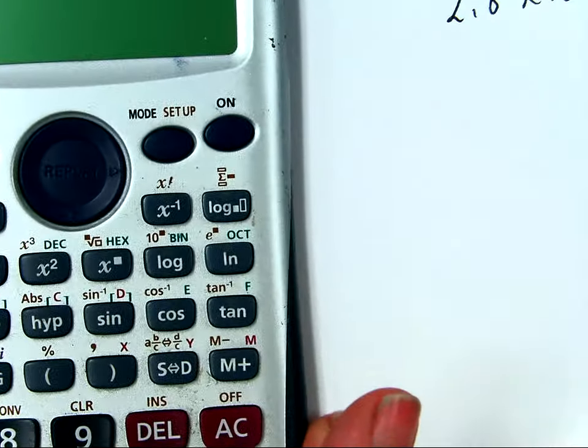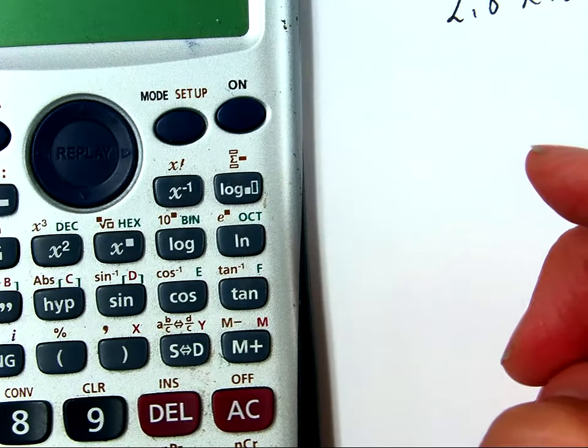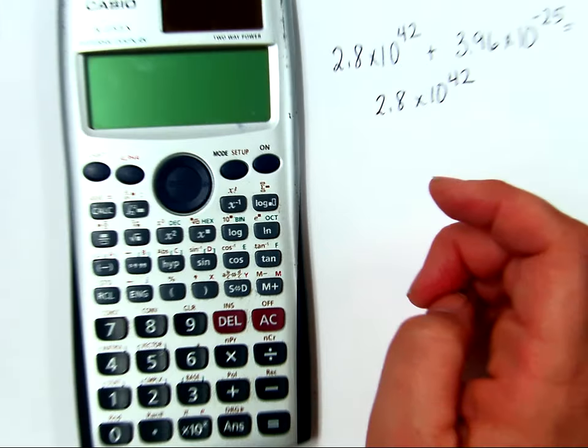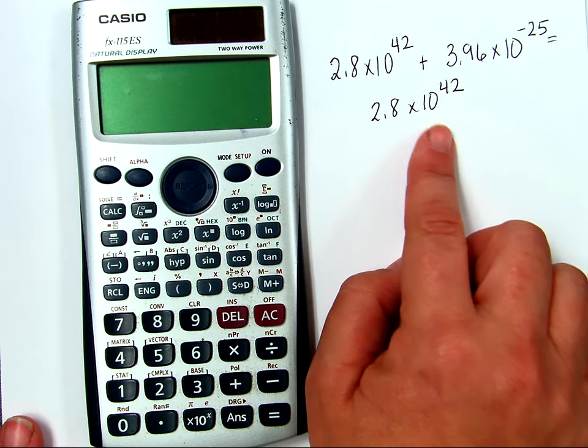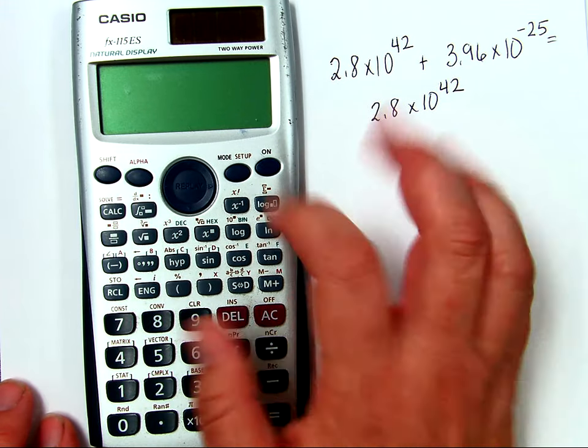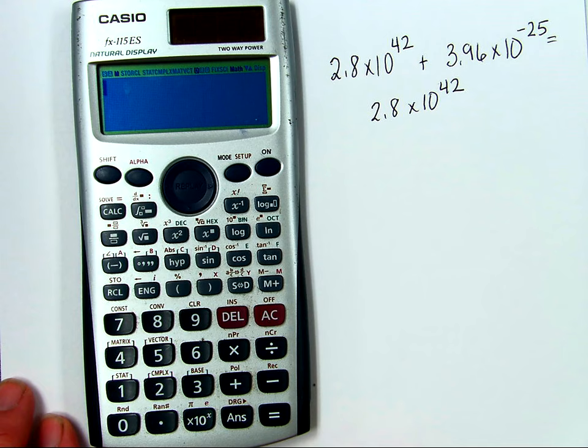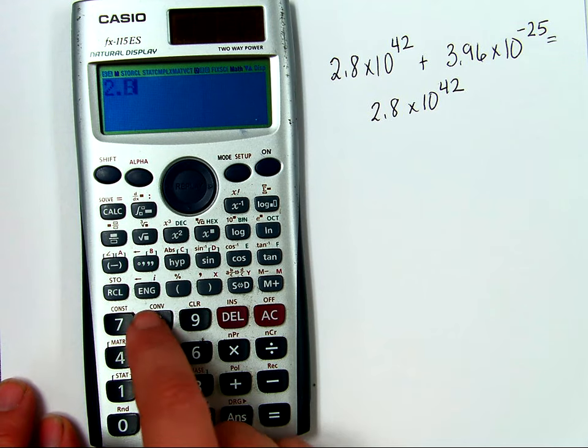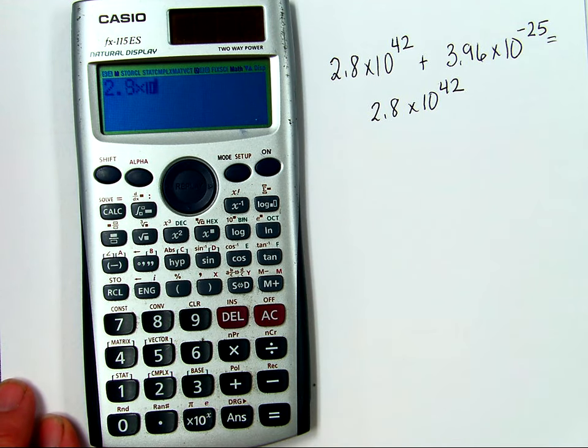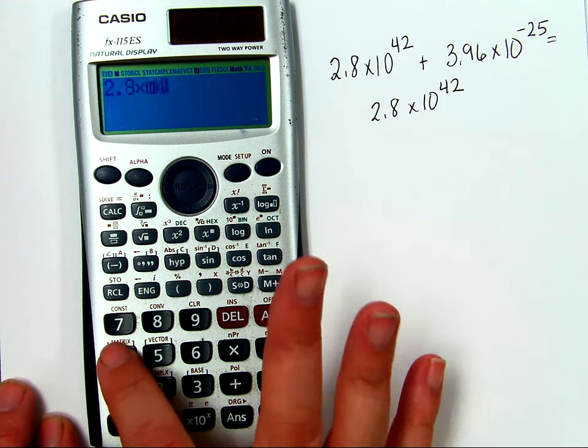So let's see if I can do this. Go ahead and scroll back out so you can see. I'm going to do the same calculation and we should get the same answer. So I'm going to take my 2.8. This time, I'm going to hit my times 10 to the X. Again, it shows me times 10 to the E, and I will hit 42.